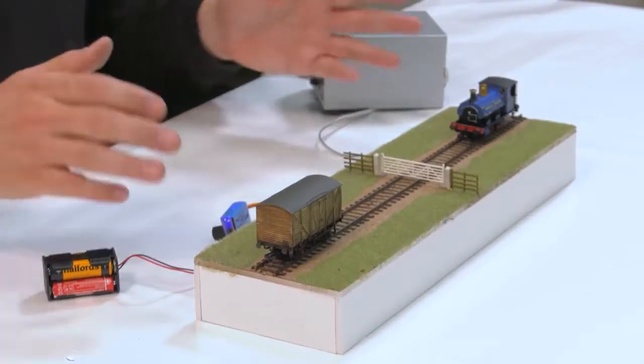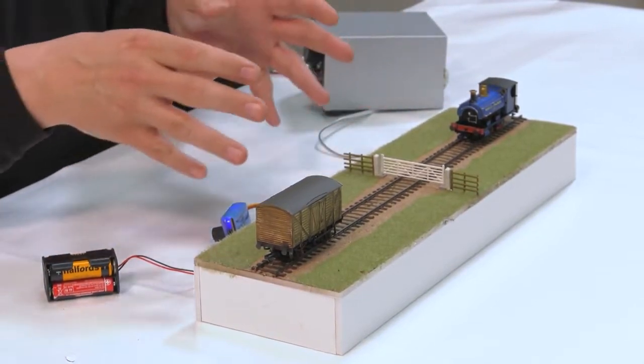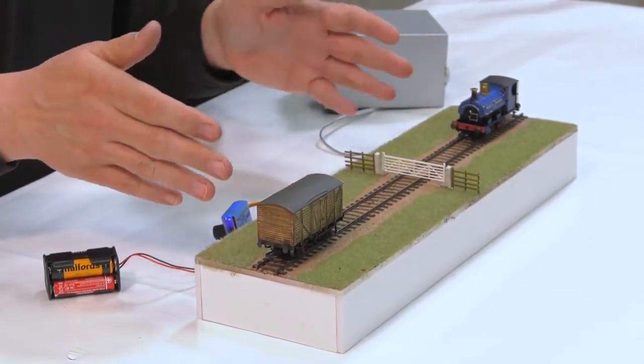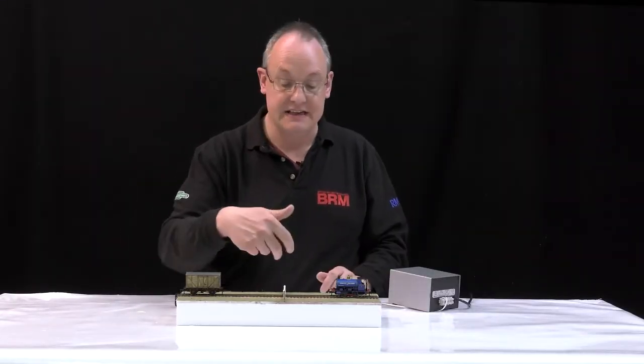Here's my little setup that I've built just as a test. Now imagine that this is an industrial siding. Out here is the main line, in here is a factory, and there's a gate across.